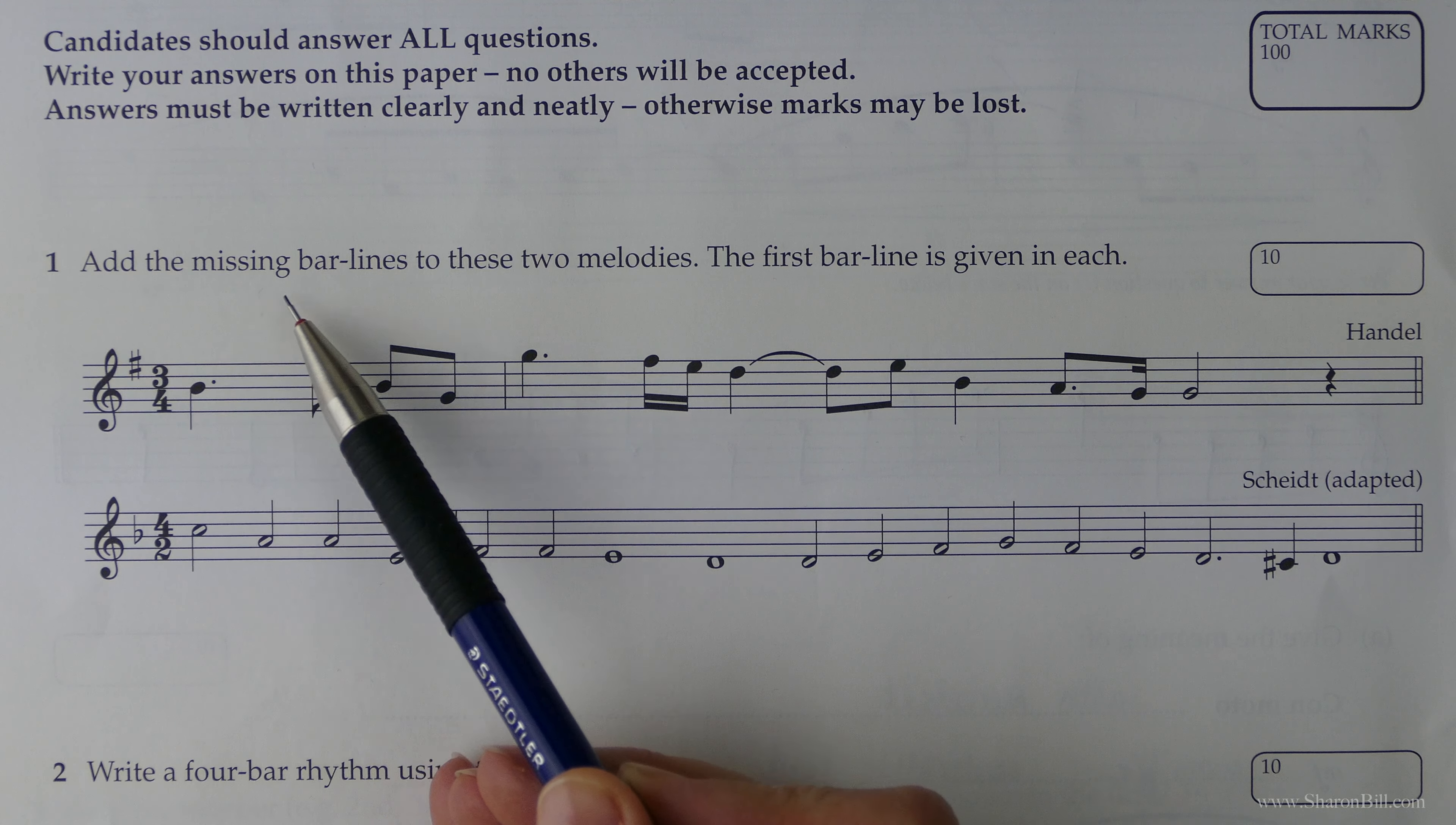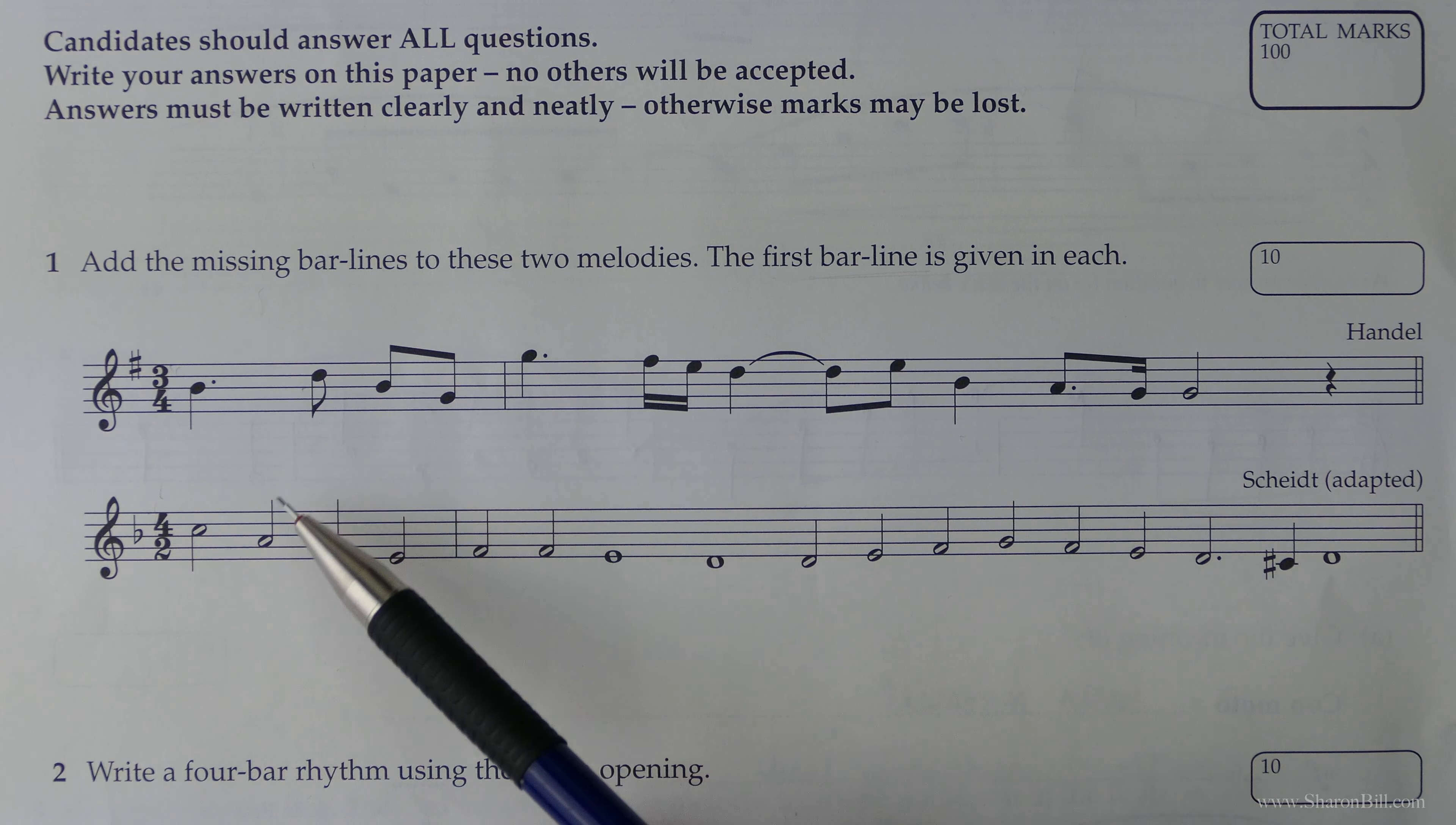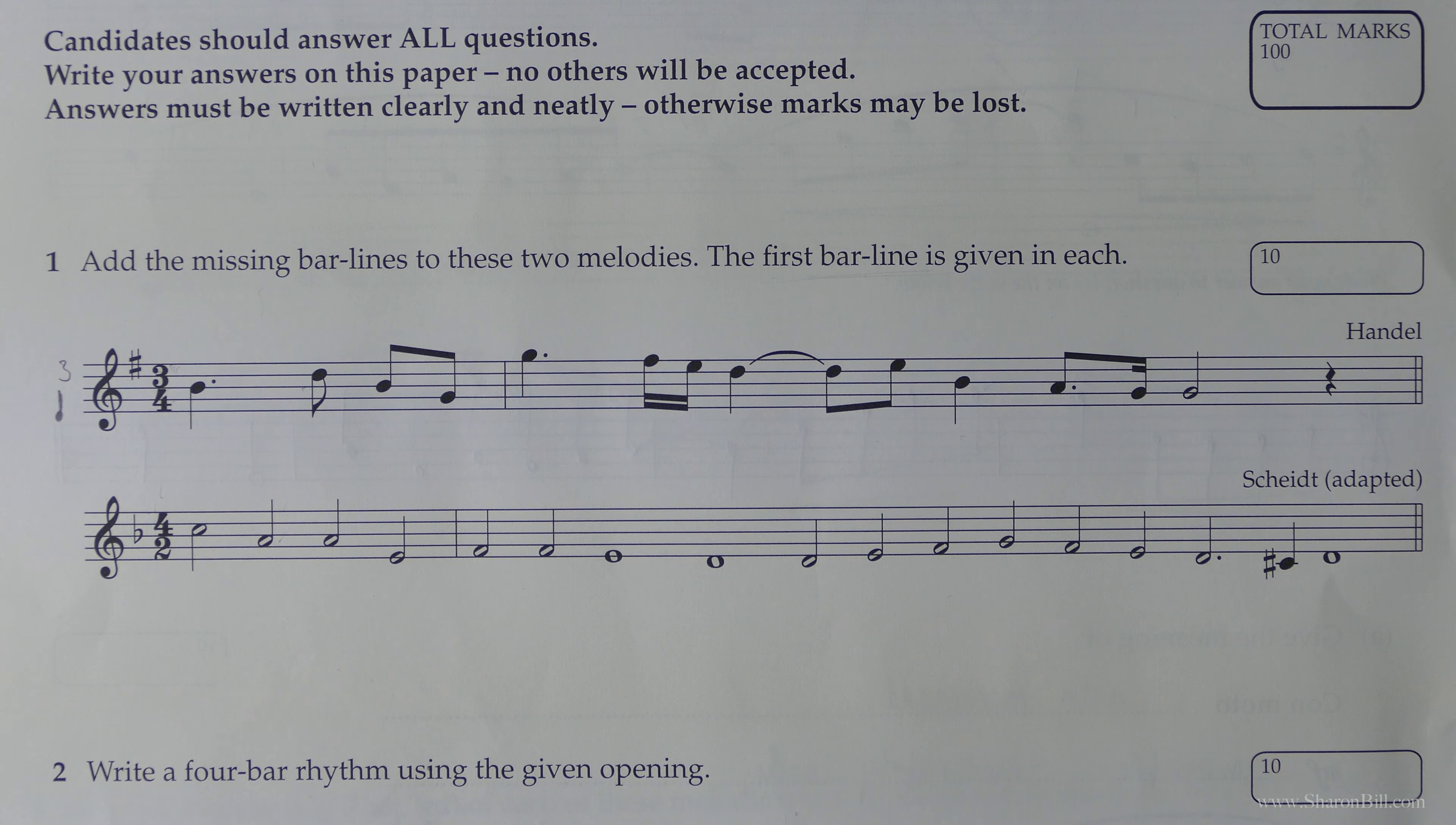So I'm hoping you've had a crack at these and now we'll look through these answers together. Question 1 asks us to add missing bar lines to these two melodies. There are two separate time signatures so we're going to have to count to different values twice. Very helpfully they've given us the first bar line in each case. So here we're counting in three quarter notes, three crotchet beats per bar.